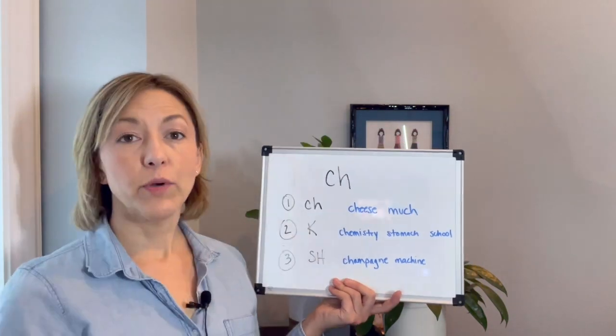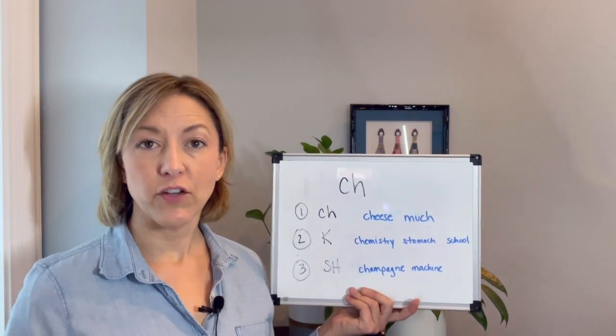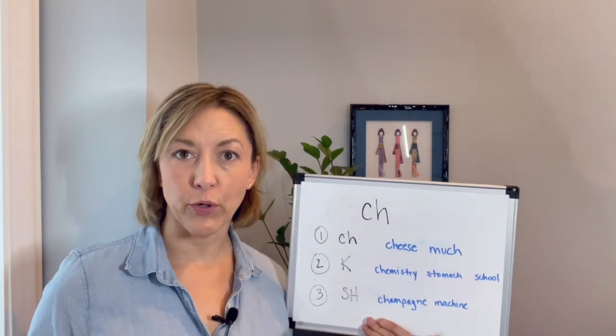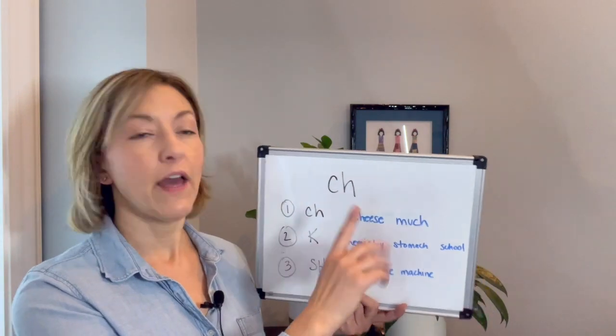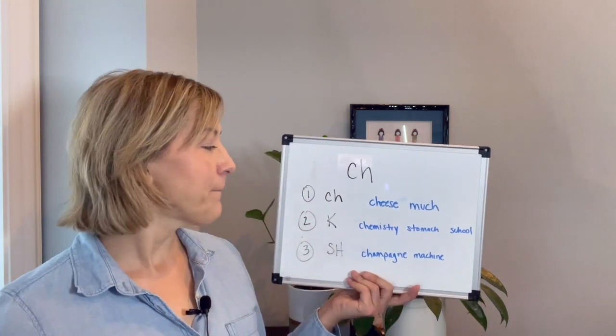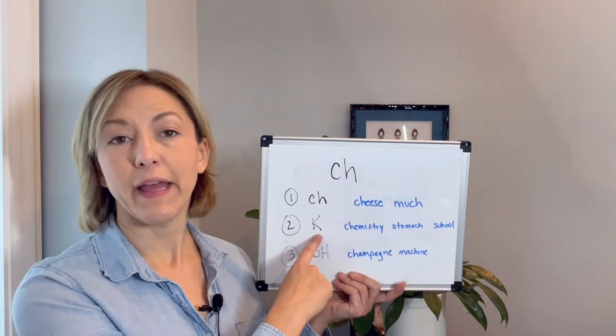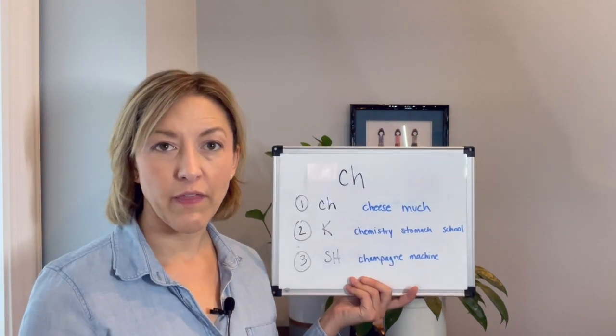So again we have three ways to pronounce the letter CH. The overarching general rule is we're going to pronounce this as CH and we see that in words like cheese and much. And we can also pronounce them like a K sound when they're in more of a word that comes from Greek.